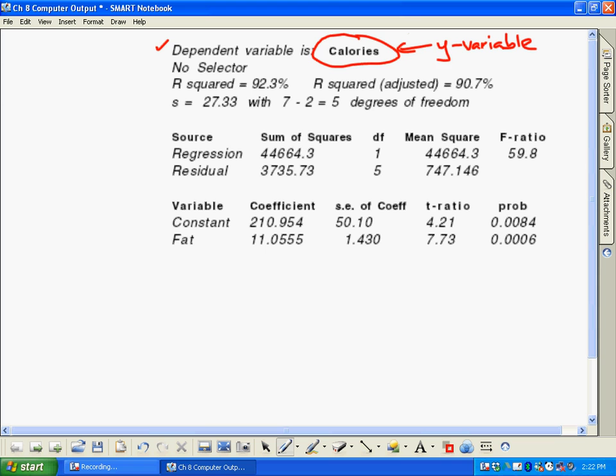You can go down the list here. There's some other things too - we know what r squared is, so r squared is 92.3 percent. There's something called r squared adjusted which you don't really worry about - it's a more complicated issue, but we don't really use that in AP stats.